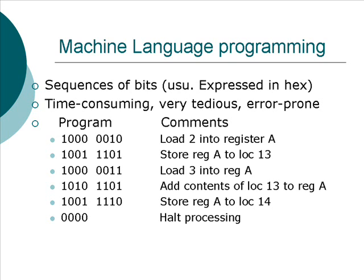That machine language program is the only kind of program that the computer inherently understands. If that sequence of ones and zeros appears in memory and you point the program counter — set the value of the program counter to the first location of your program in memory — then the computer will execute your program directly. It doesn't need to be translated or anything.